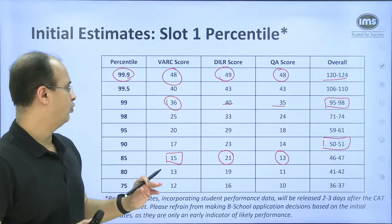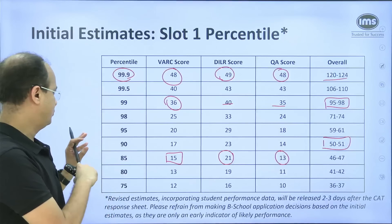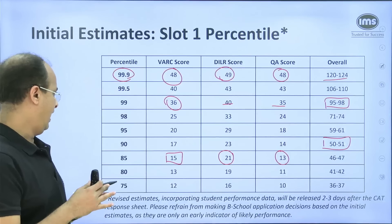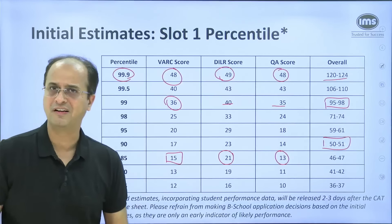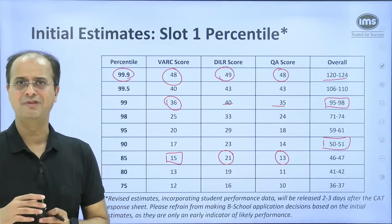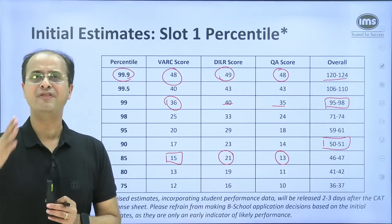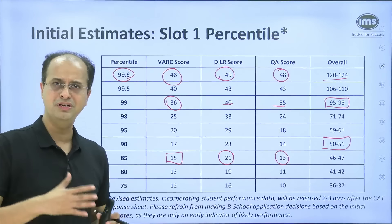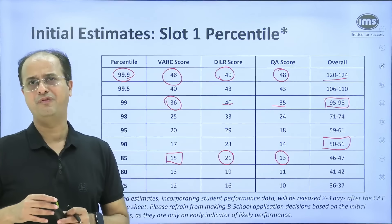To repeat: a score of about 95 to 98 will get you the 99 percentile mark; a score of about 50 will take you to the 90 percentile mark; and a score of about 46 will get you to the 85 percentile mark. These are initial estimates and we are going to revise them at the end of today, and definitely once the response sheet is out — where we will have much more student data to come up with a more refined and accurate version.